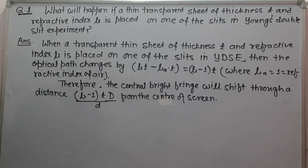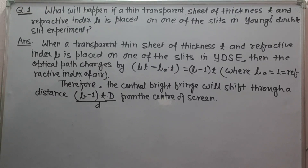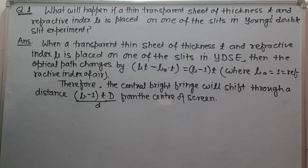When a transparent thin sheet of thickness t and refractive index mu is placed on one of the slits in Young's double slit experiment, then the optical path changes by (mu × t) minus (mu_air × t). Because mu_air is 1, it becomes (mu minus 1) into t.